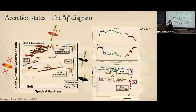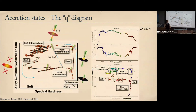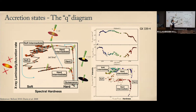These X-ray binaries spend most of their life in quiescence — we don't see them and may not know they're there. They're discovered when they go into outbursts, which can last from days to weeks to months. A few sources have been in outburst since they were discovered decades ago, but that's pretty rare. Here's a particular example of an outburst of GX339, which lasted approximately 300 days, roughly a year. All black hole X-ray binaries, when they go into outburst, seem to follow a similar pattern.